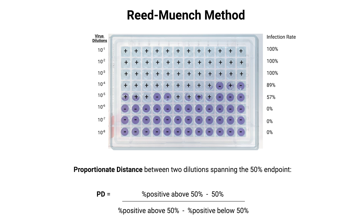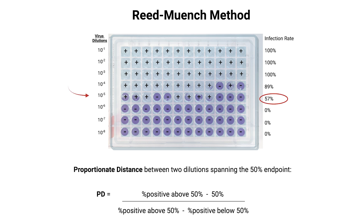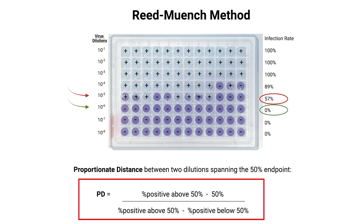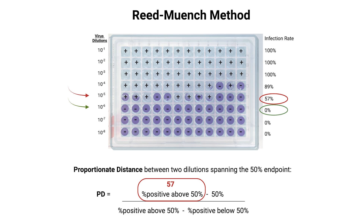How do we make the calculation? We need to calculate the proportionate distance between the two dilutions spanning the 50% value. In our case, this occurs between row 5 and 6. The proportionate distance is calculated using this equation: the percentage next above 50% minus 50, divided by the value obtained from subtracting the percentage next below 50% from the percentage next above 50%. In our case, in the top half of the equation, 57 minus 50 is 7. In the bottom half, 57 minus 0 is 57. So, 7 divided by 57 equals a PD value of 0.12.